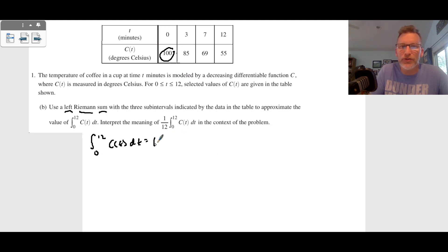we're going to start with the left hand. So we're going to start with 100 degrees Celsius. And we're going to multiply by the delta X of three minutes here, plus the next value, which is 85 degrees Celsius times the difference here, which is four minutes, plus 69 degrees Celsius times the difference right here, which is five minutes.